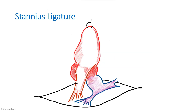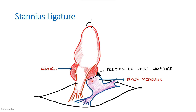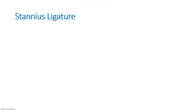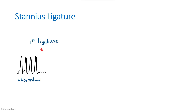The next experiment is the stannous ligature. In this experiment we tie ligatures between the different chambers of the heart and observe the result. The first ligature is placed between the sinus venosis and the atria, and we record its effect. Then we tie a second ligature between the bulbus arteriosus and the ventricles, and take the recording after positioning the second ligature as well.